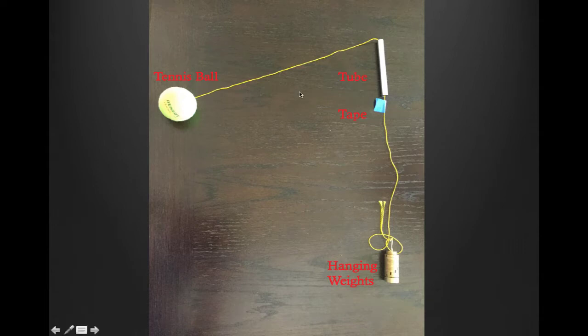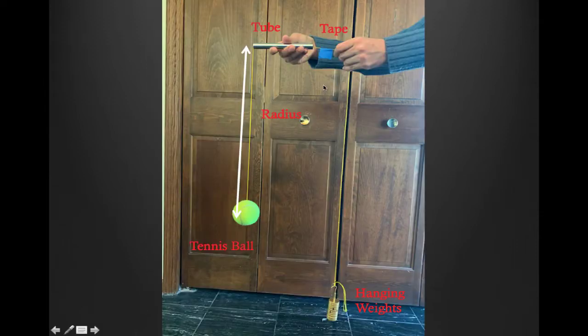When swinging the ball in a circle, we want to keep the radius constant. As long as the tape stays just below the tube, we know the radius is approximately fixed. When we change the radius, we move the tube and slide the tape accordingly.